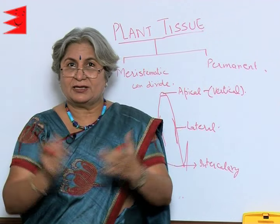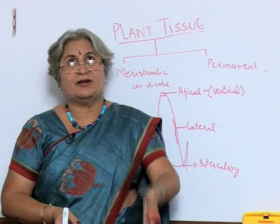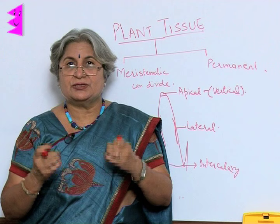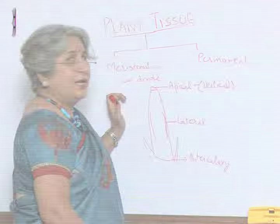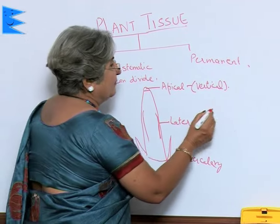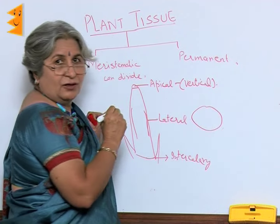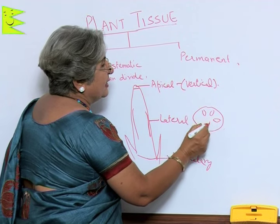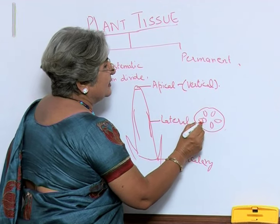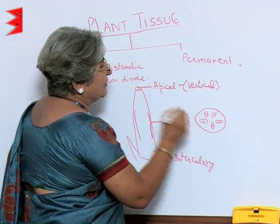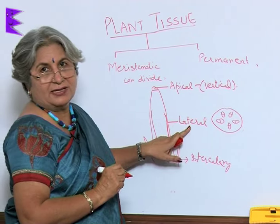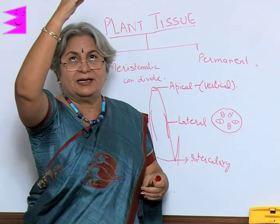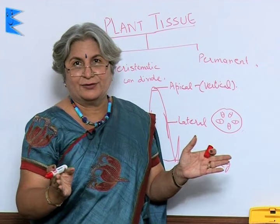Large tall trees also have considerable girth, which is necessary to maintain their height. This is due to secondary growth from the lateral meristem. If we take a slice of a stem, between the vascular bundles are special cells — the secondary or lateral meristem — which cut cells laterally, contributing to growth in girth rather than height.